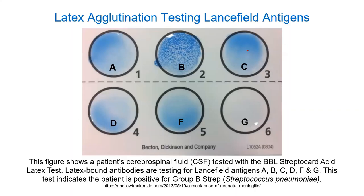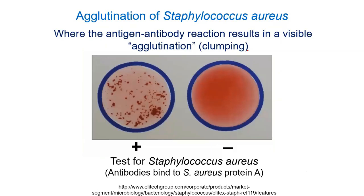Here's a diagram showing some different spinal fluid samples being tested for Lancefield antigens. You can see the B-group Lancefield antigens were recognized in sample two — you can see the clumping. Agglutination tests don't just have to be for Streptococcus — there are agglutination tests for Staphylococcus aureus as well. In that case the antibodies bind to a specific protein on S. aureus called protein A, which is a surface antigen.